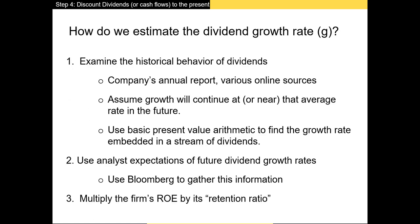Now let's discuss how we estimate a firm's dividend or cash flow growth rate. There are three prominent methods. The first is to estimate it yourself through firm analysis, or naively assume dividends will continue growing at the same historical rate. The second method is to use analyst expectations. The problem is that you're relying on others who might be inaccurate in their estimation.